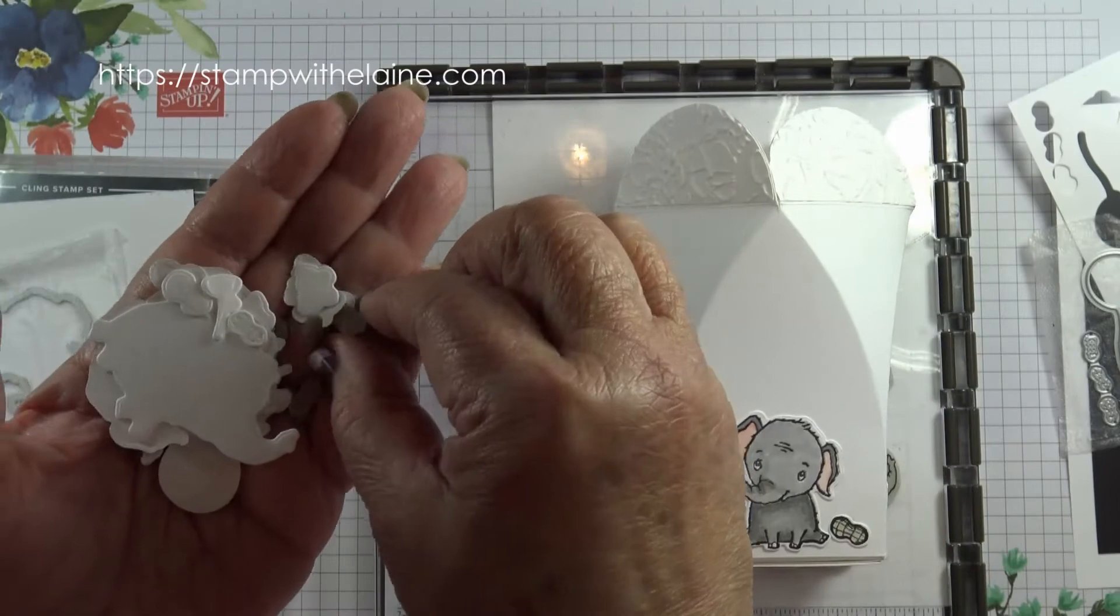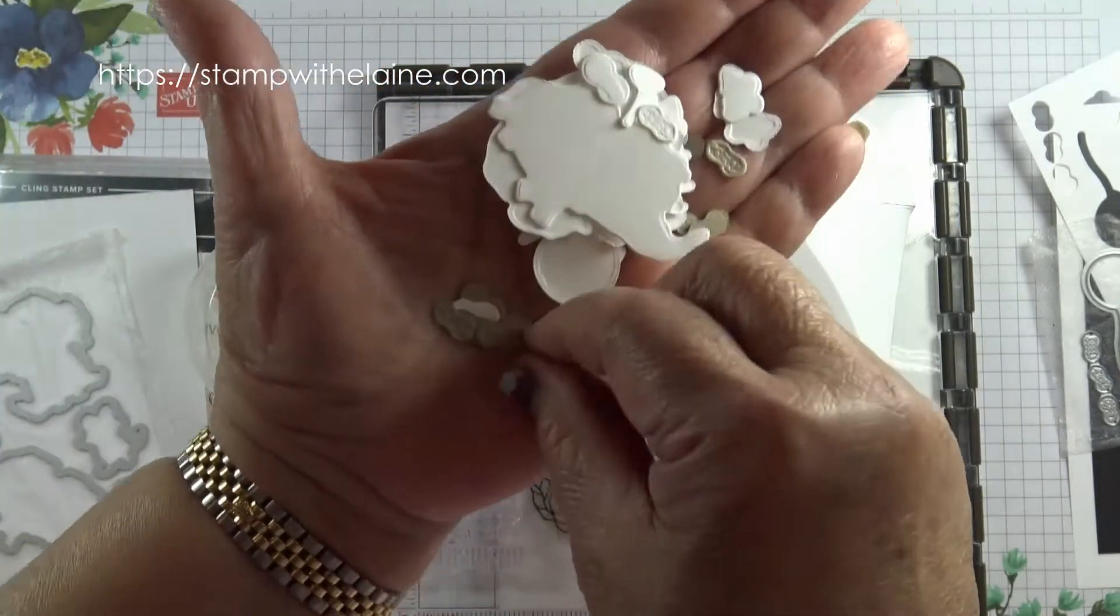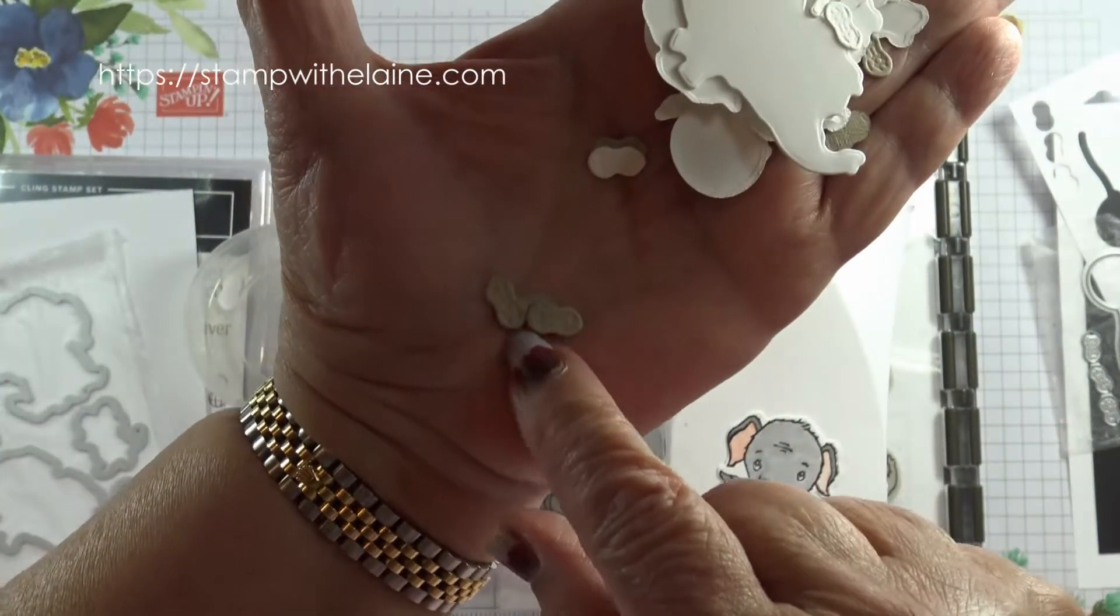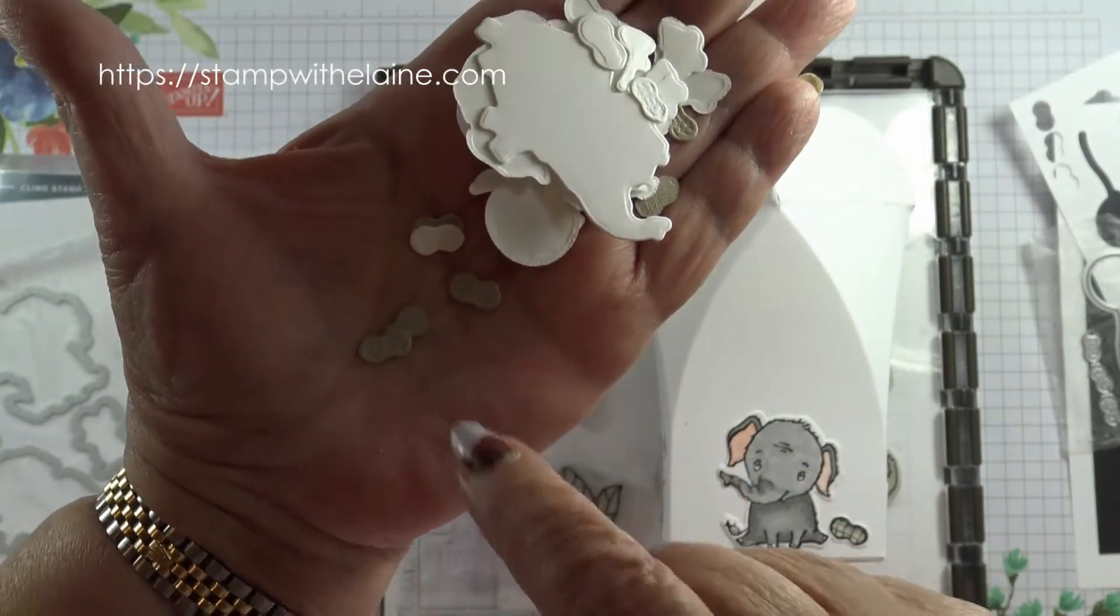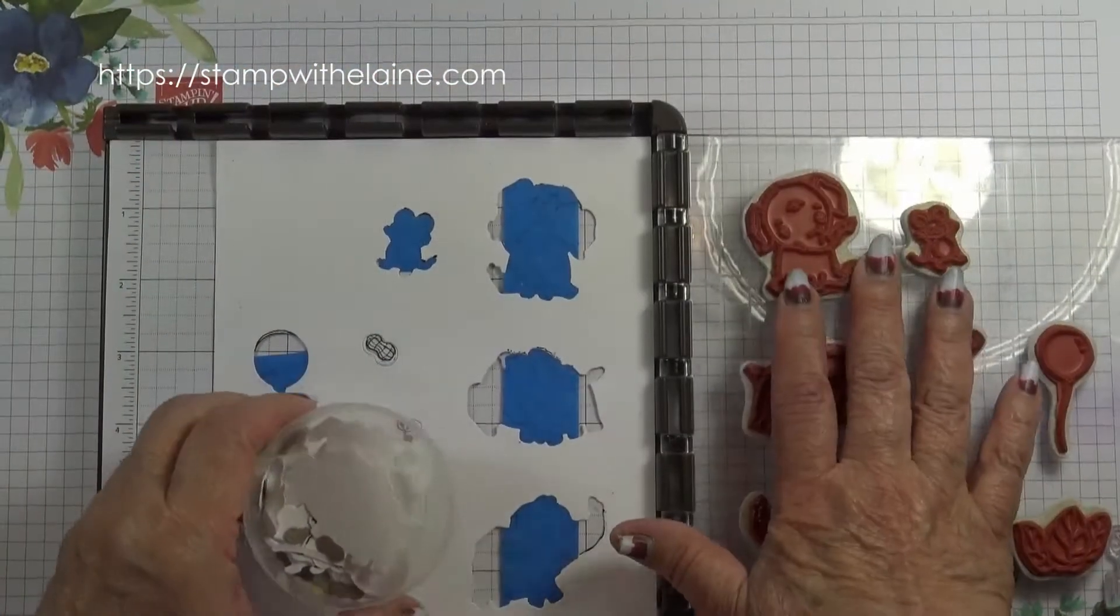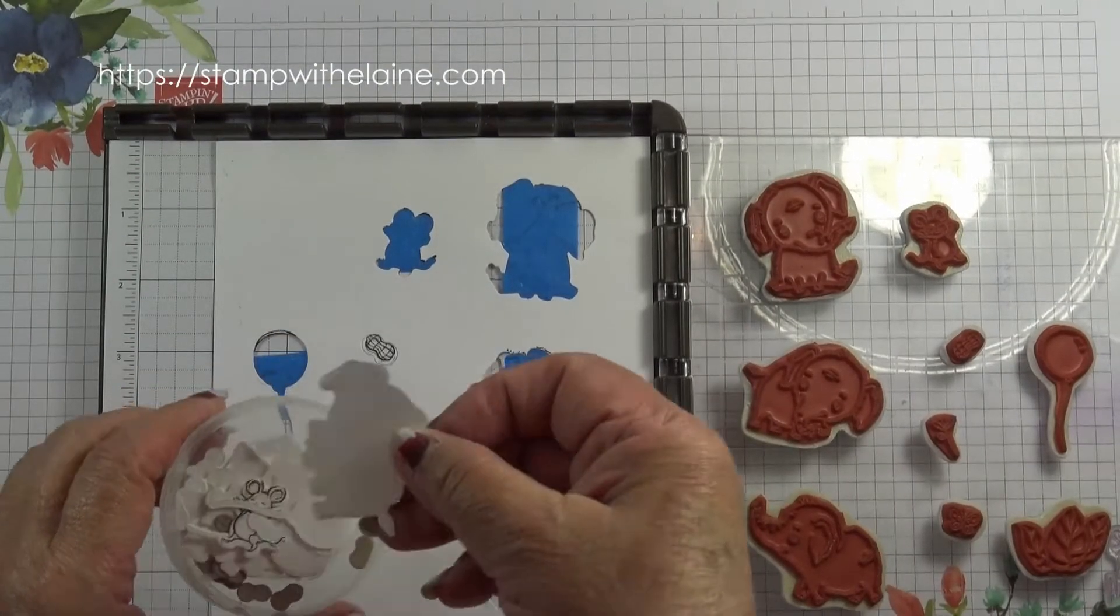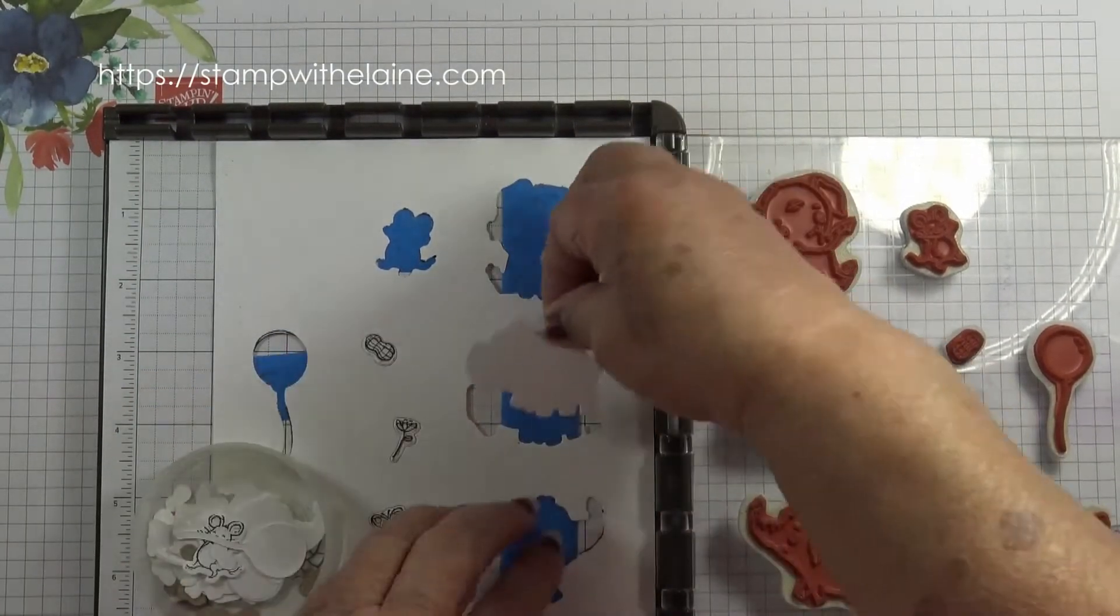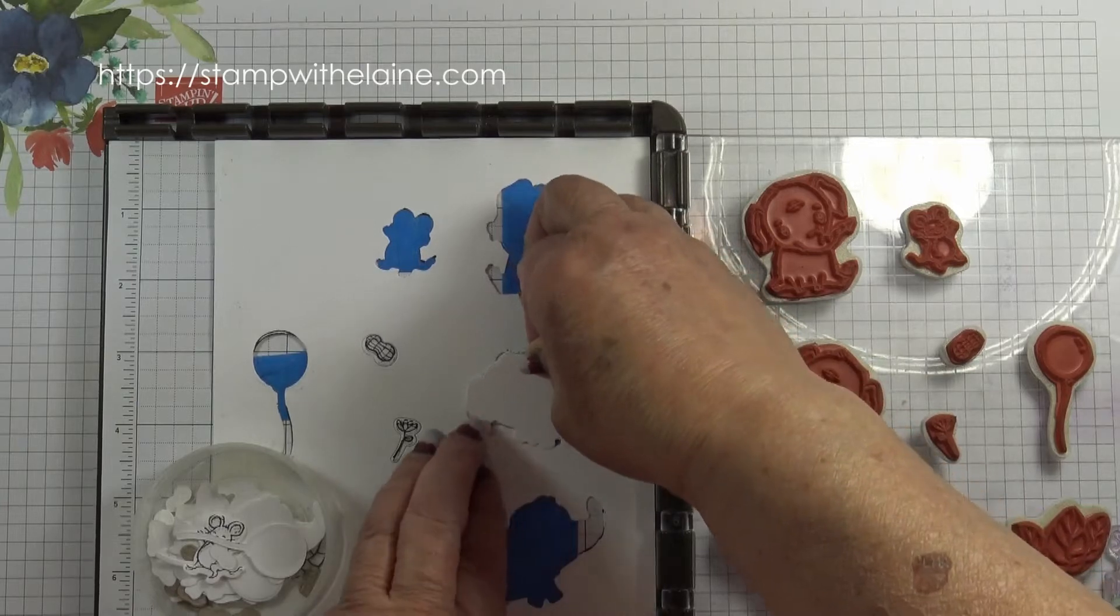Yeah, I die cut some in the crumb cake cardstock. Can you see that? So I've explained how I created the template, now I can pop my blanks in.